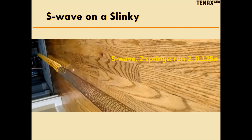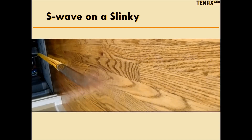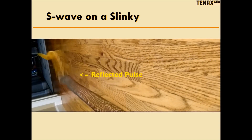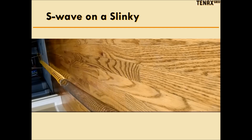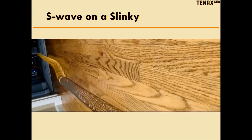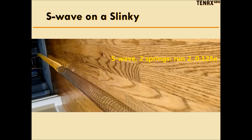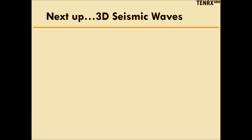Notice that I taped two slinkies together — one is metal while the other is plastic. Something very interesting happens when the wave hits the boundary: part of the wave is reflected back to me. This happens because the two slinkies have different stiffness. The same thing happens when real waves hit a rock layer boundary. The polarity of the reflected wave is the same as the source wave, and we can use this to determine that the plastic spring is stiffer than the metal spring. We can use the same logic to tell whether one rock layer is stiffer than another — more on that later.